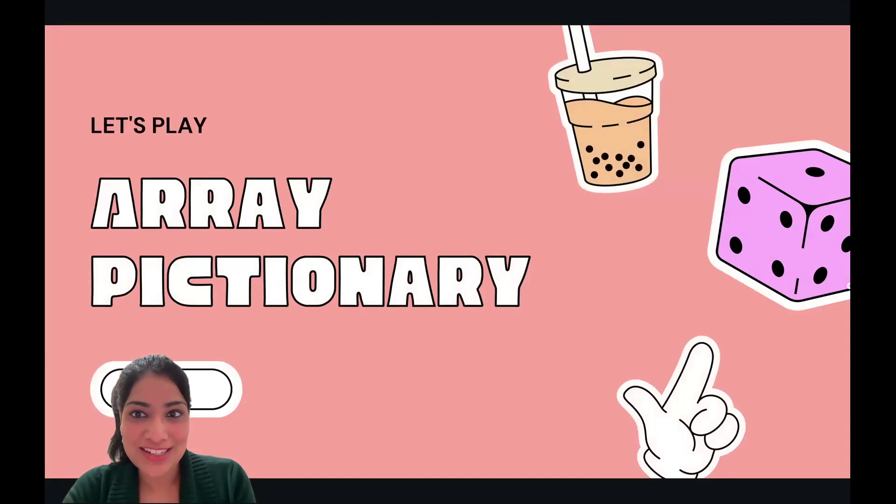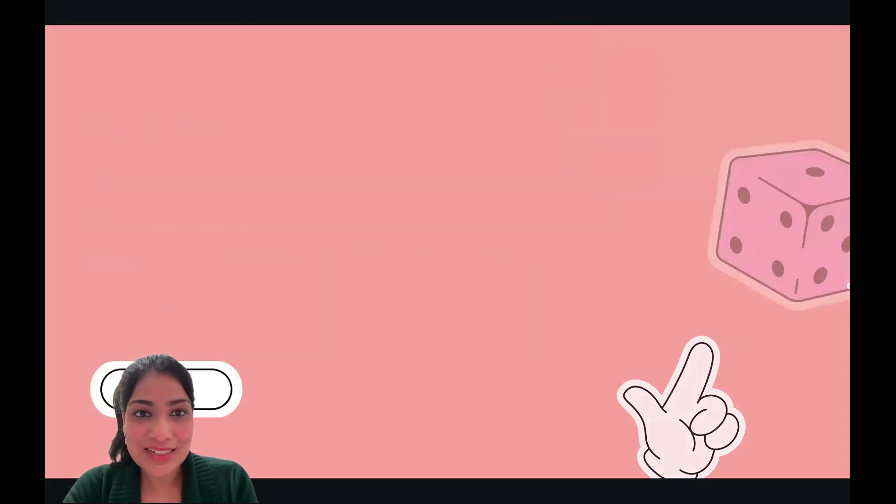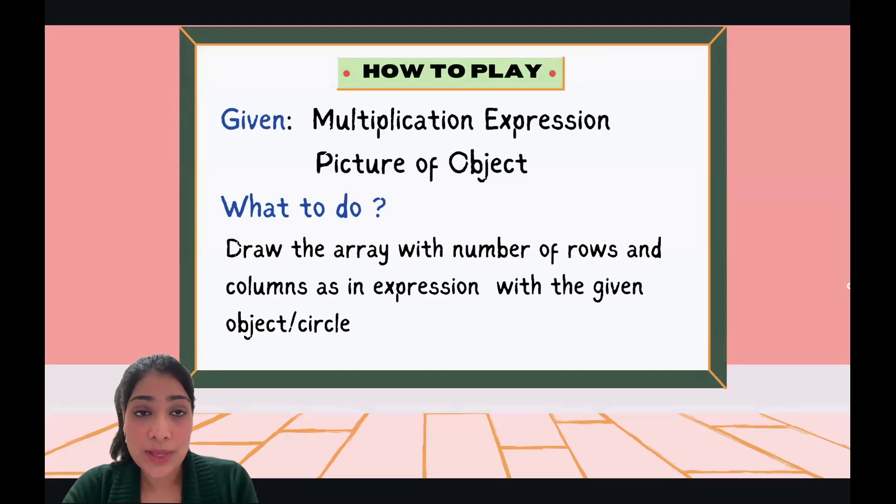Let's play our second game: array pictionary. Are you ready? How do we play this? Well, you will be given a multiplication expression and a picture of an object. What we need to do is draw an array with the number of rows and columns as is in the expression with the given object, or if you don't know how to draw the object, you could use any symbol like a circle, square, or whatever you like.